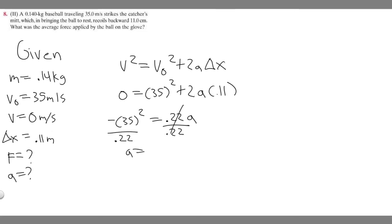If we want to solve for a we divide both sides by 0.22. If you do this you get acceleration equals -5568.18 meters per second squared.